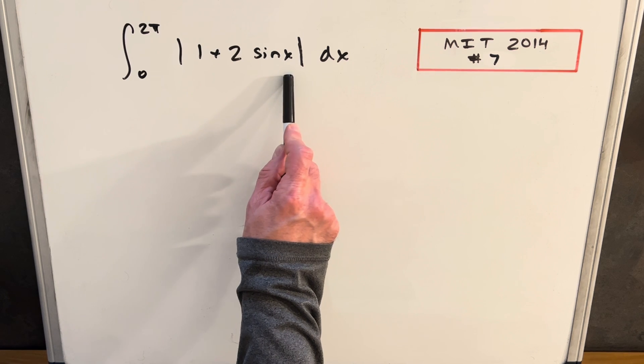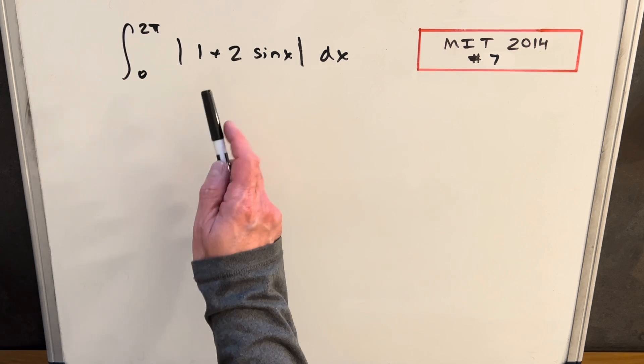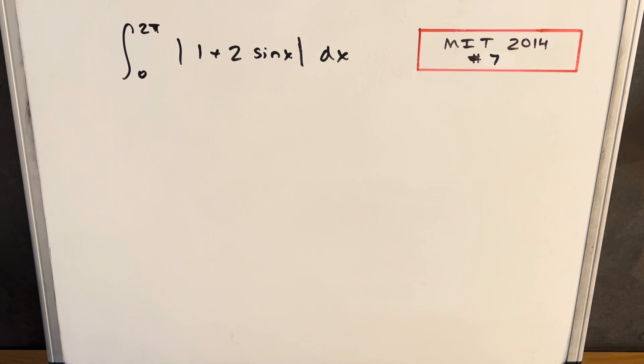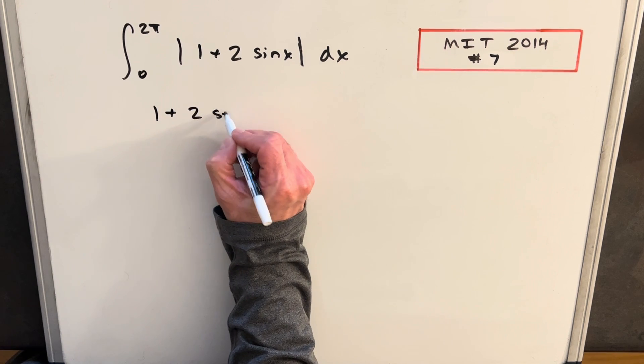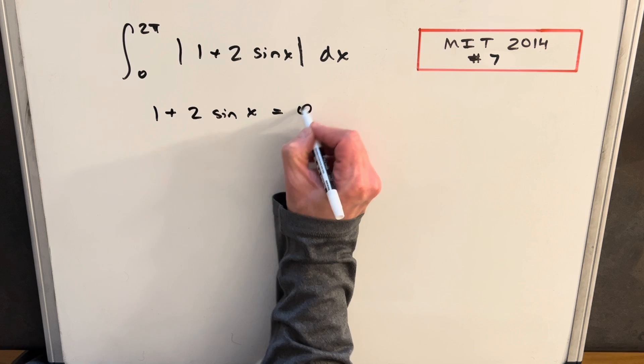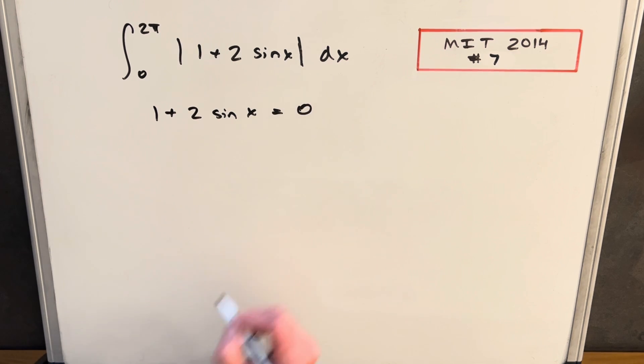Wherever this is positive, we can remove the absolute value. And wherever this part inside here is negative, we could just add a negative in front and that will reverse the sign. So we can just graph this, but I think what I want to do is let's see where this thing is going to be 0 because that's going to tell us where we want to break up our integral and where the change in sign might occur.